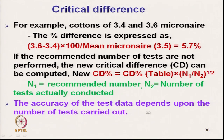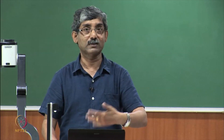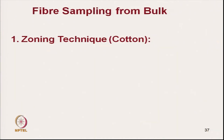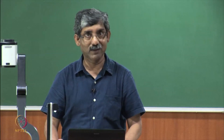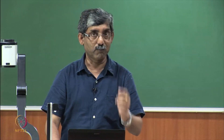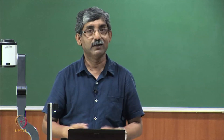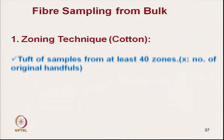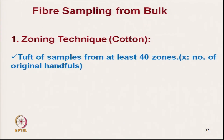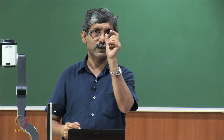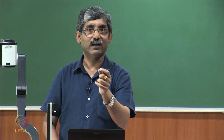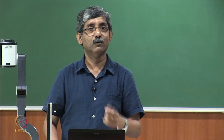The accuracy of the test data depends upon the number of tests carried out — more samples means higher confidence level and more accuracy. Now we will start with the sampling technique: from the bulk we take the laboratory sample, and for cotton the technique used is called the zoning technique.